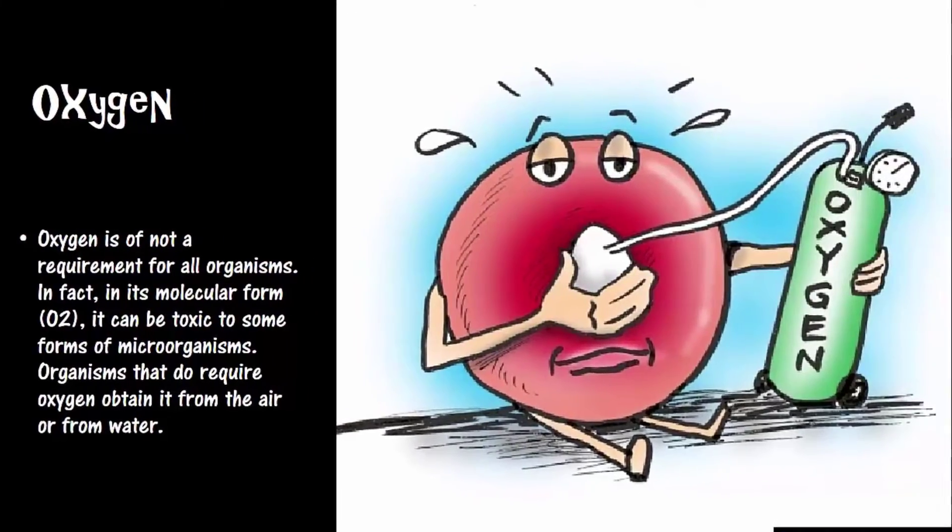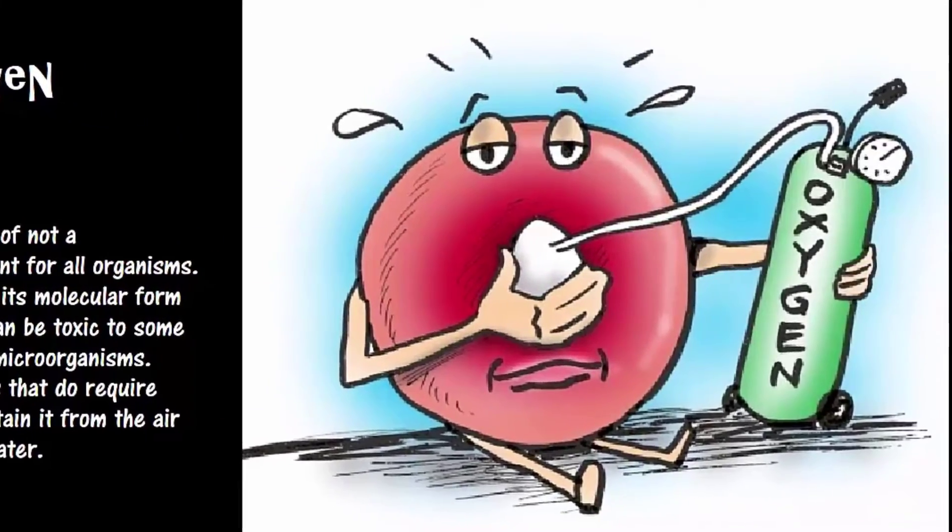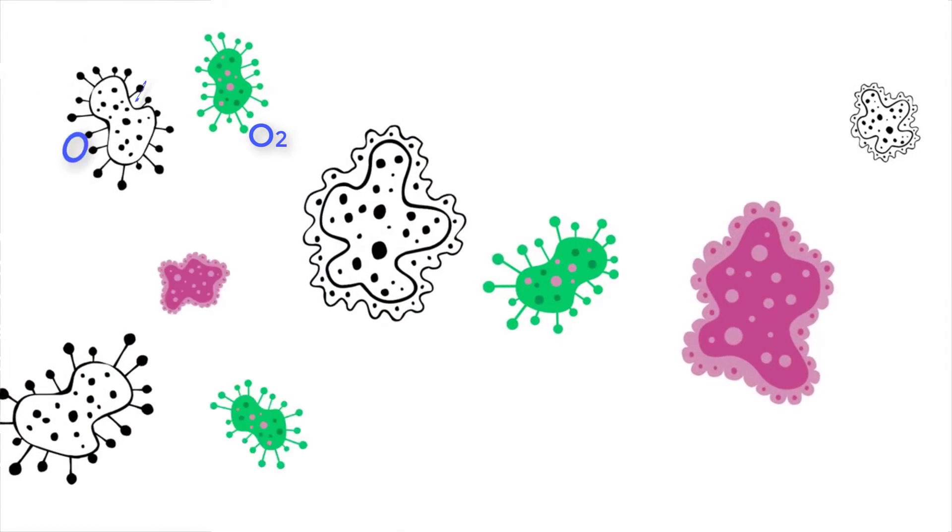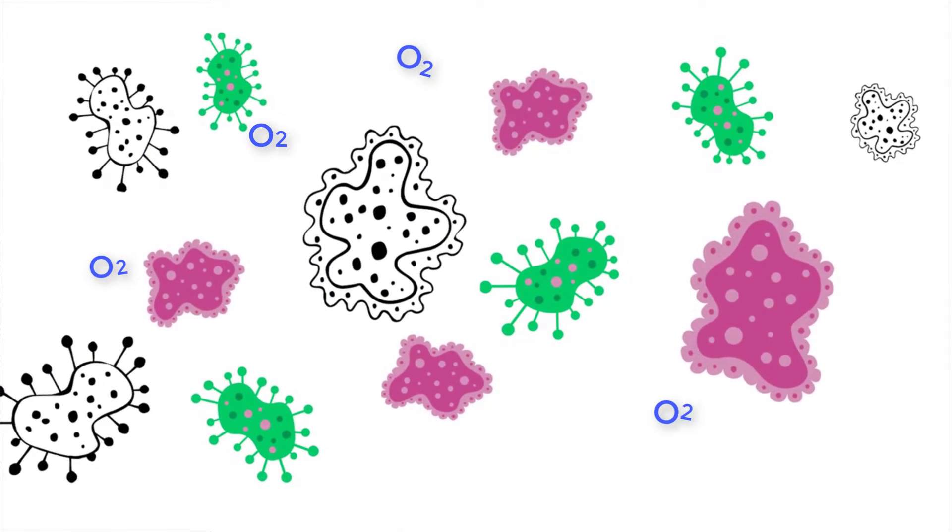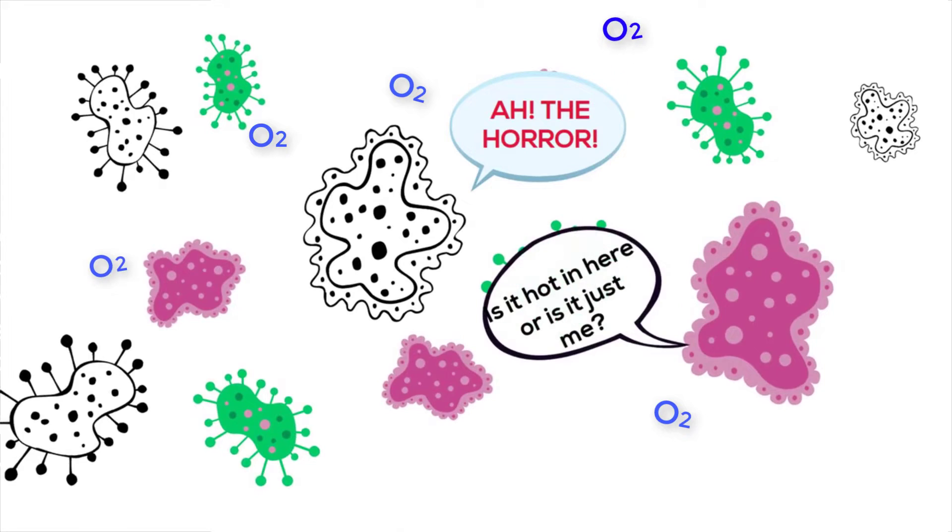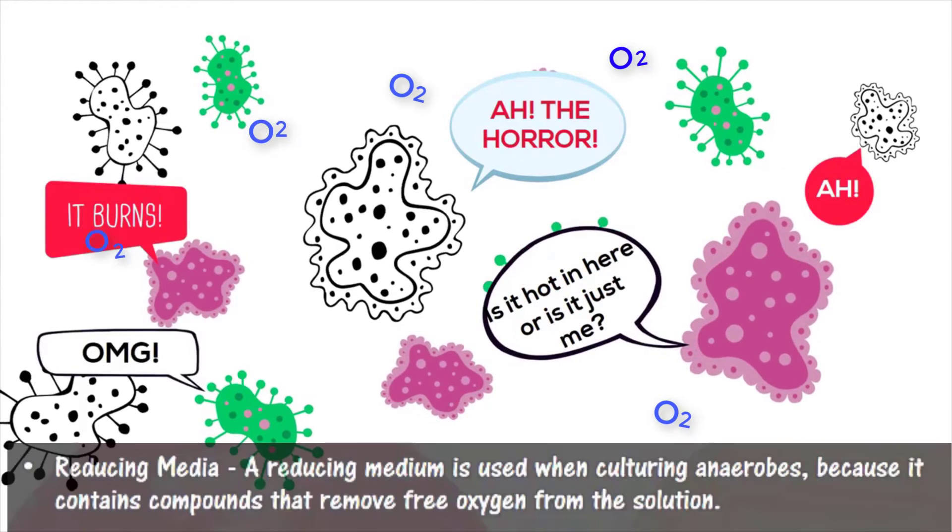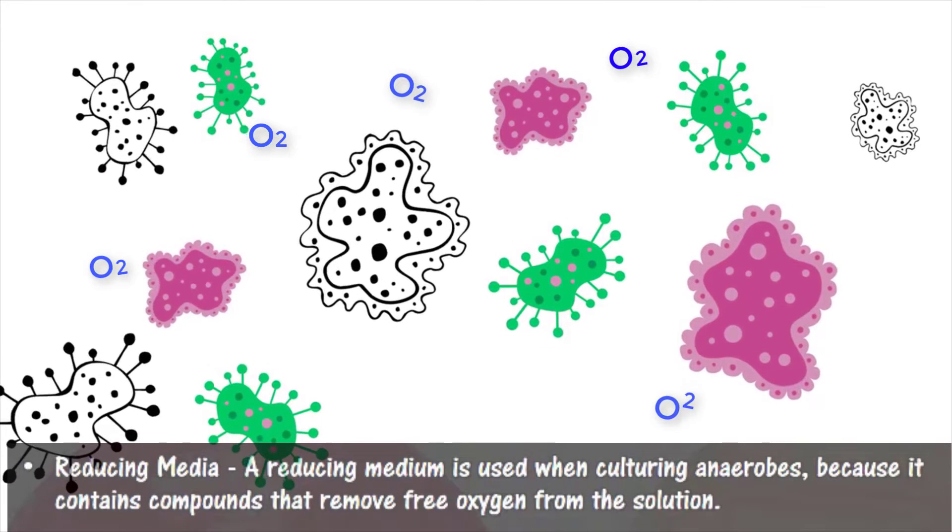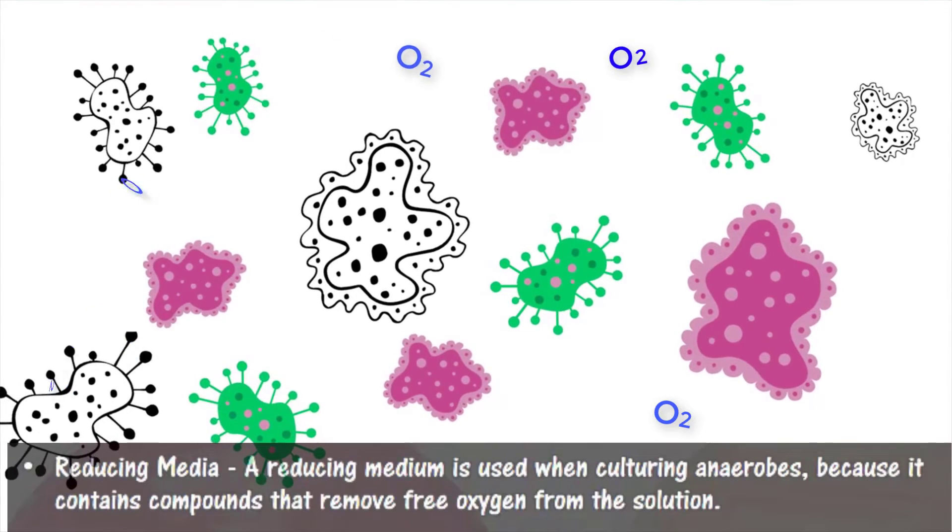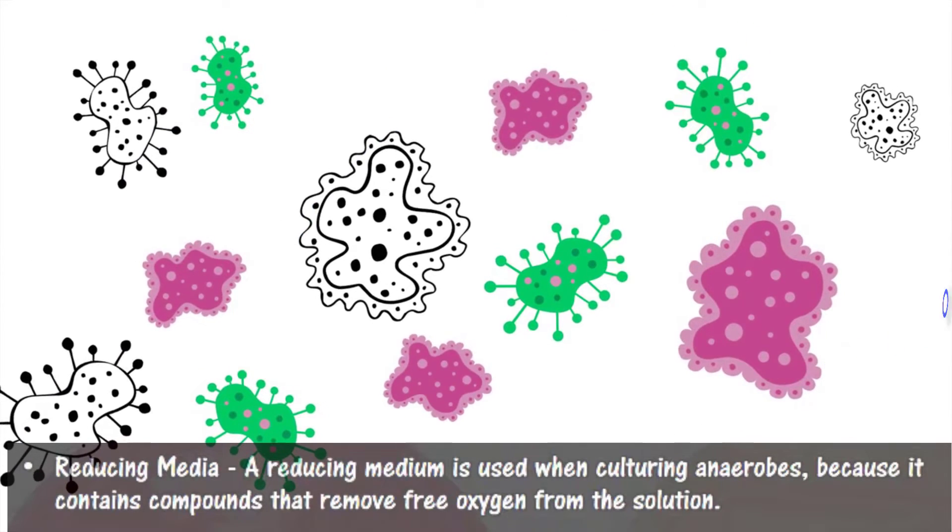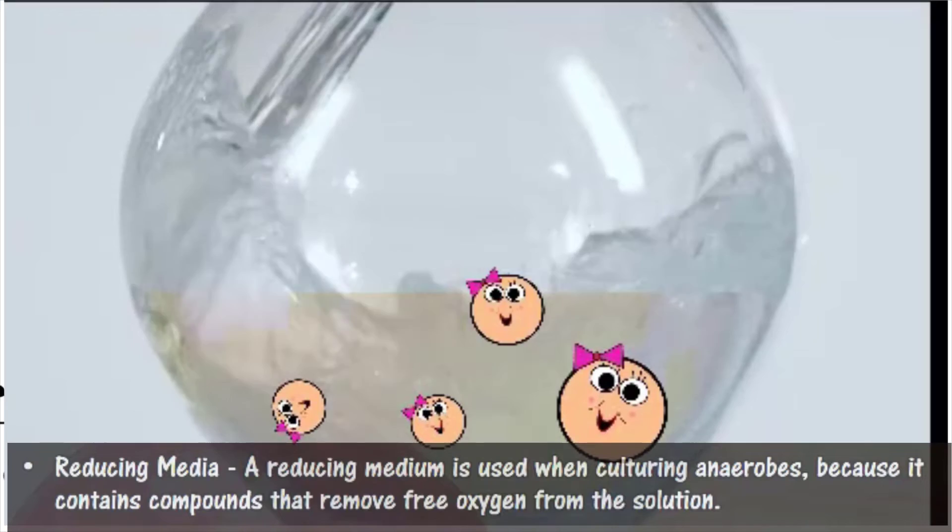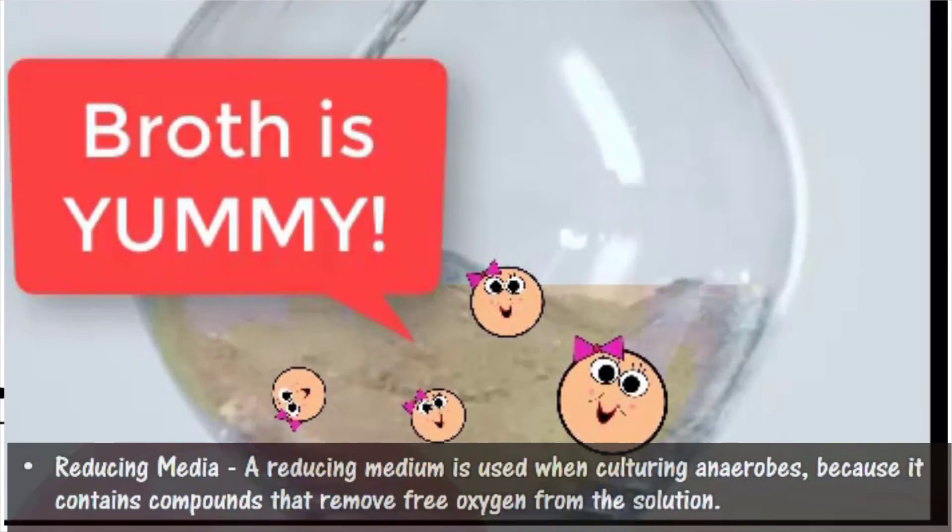Oxygen is not required for all organisms. In fact, in its molecular form, O2 gas, it can be toxic to some organisms. Reducing medium is used when cultures of anaerobes are necessary because it contains compounds that remove free oxygen radicals from the solution.